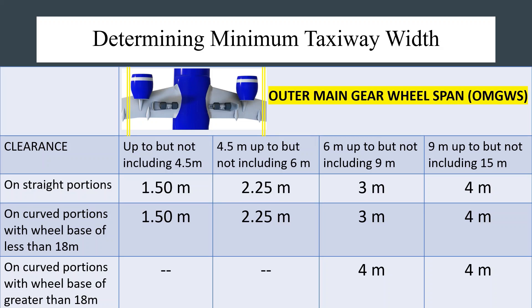If you don't understand what an outer main gear wheel span is, kindly click on the link above and watch the previous video on that lesson. The clearance distance, which is a safety margin, is added to the width of the outer main gear wheel span to obtain the minimum width of the taxiway.